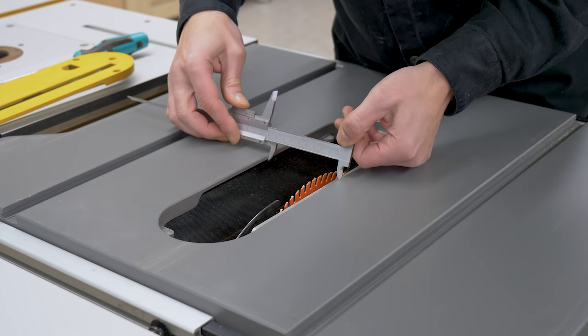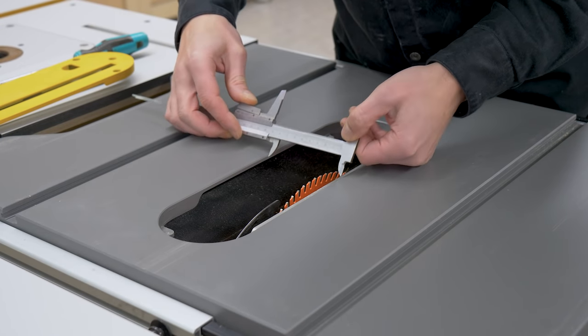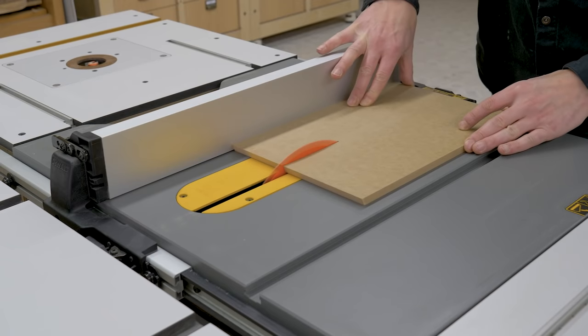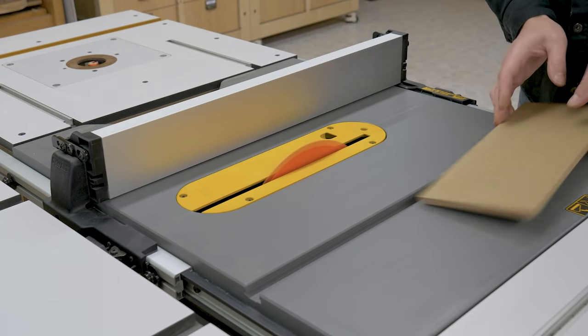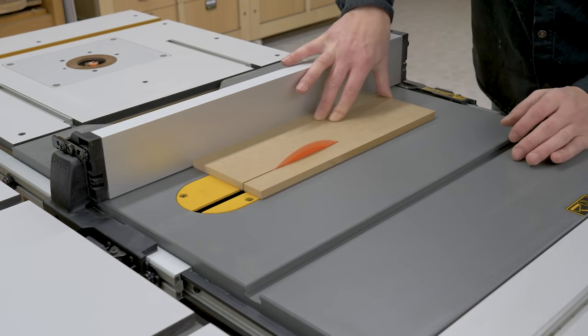Now I'll show you how I made the new inserts. First I'll measure the gap for the insert and cut two pieces of MDF to size. I'll use these as a jig to cut the new inserts.